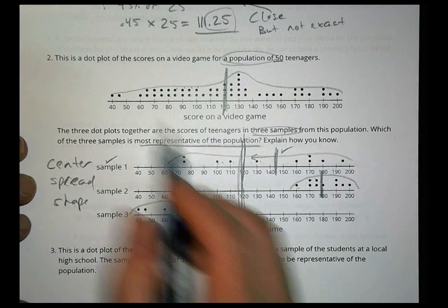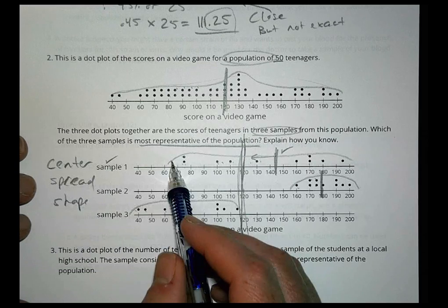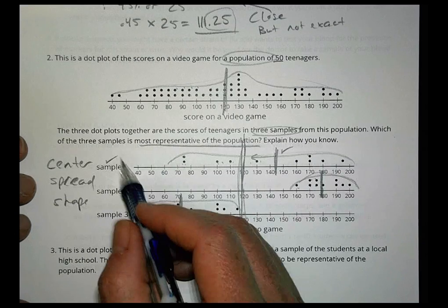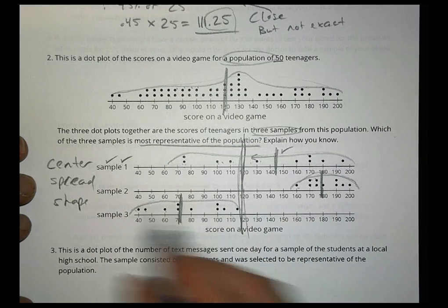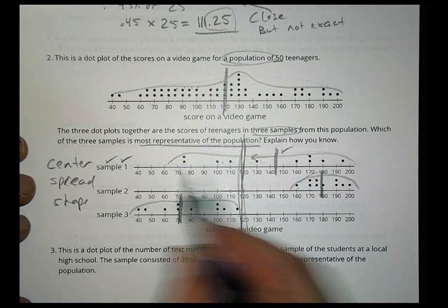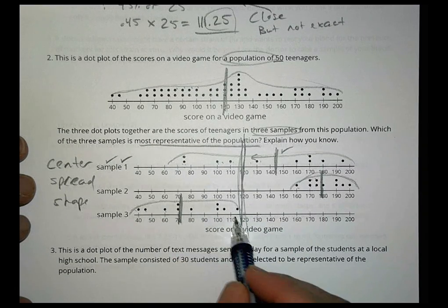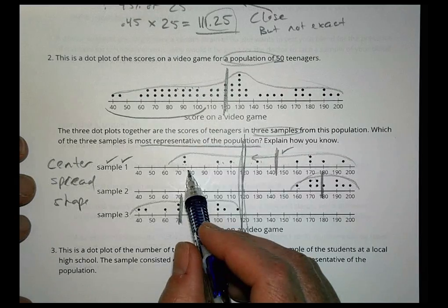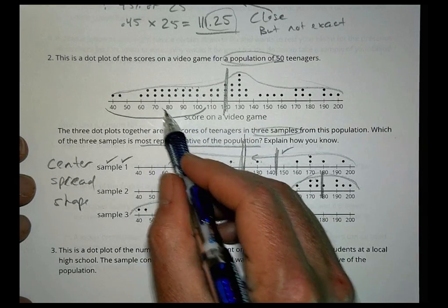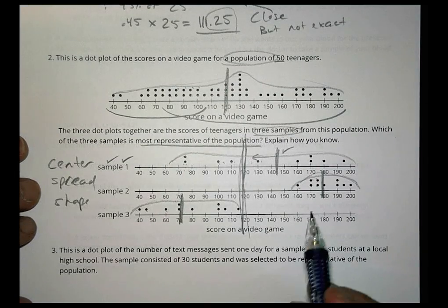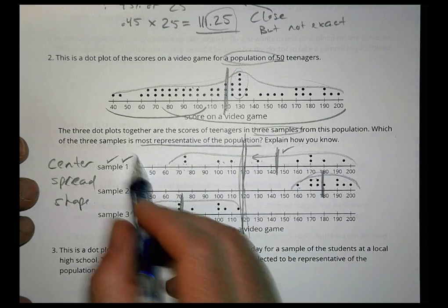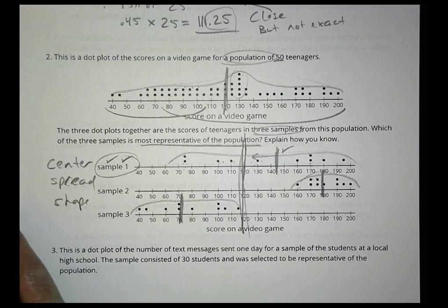For spread: the population goes from very low to very high. Sample 2 has a narrower spread — only about 40 units wide. Sample 1 spreads from about 70 to 200, a much larger range. The shape of sample 1 also has a similar peak pattern. Overall, sample 1 is the most representative of the population.